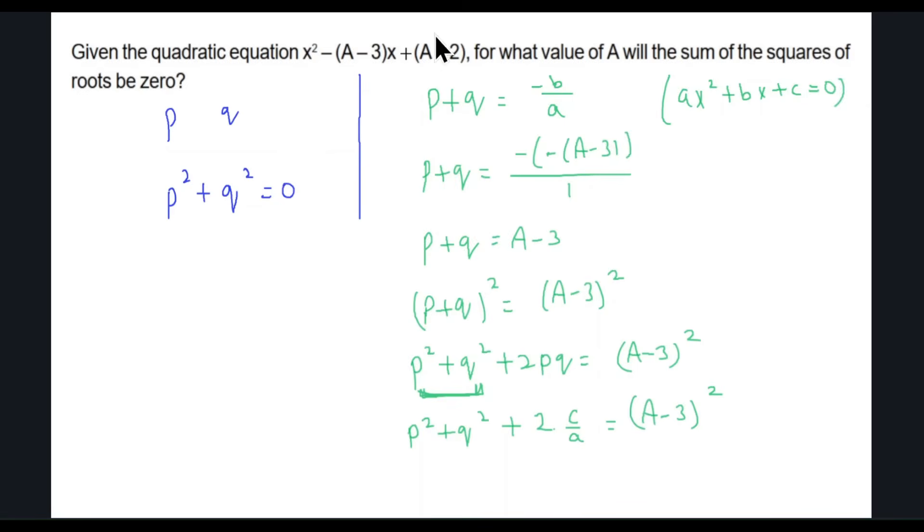The formula for product of the roots is C over A, and that equals A minus 3 whole squared. C is A minus 2, and A is just 1. So I have P squared plus Q squared plus 2 times A minus 2 equals A minus 3 whole square. I want P squared plus Q squared to be equal to zero. If I isolate P squared plus Q squared, I'm going to get A minus 3 squared minus 2 times A minus 2 equals zero.